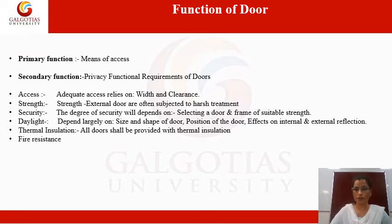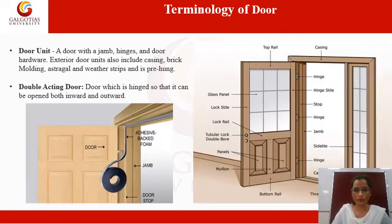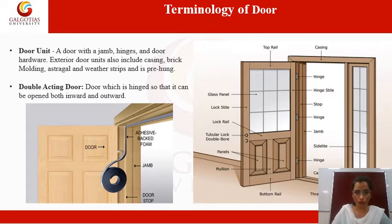Next is the terminology of doors. The first term is door unit — a door combined with a jamb, hinges, and door hardware constitutes a complete door unit. The jamb and hinge are visible parts of the door unit, and we will discuss other parts in detail in the upcoming slides.